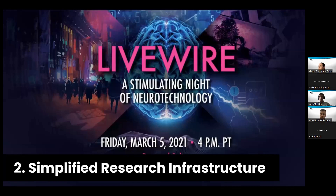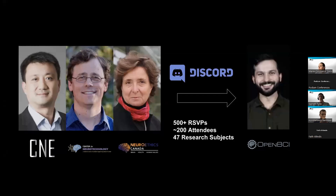The second principle is simplified research infrastructure — developing technologies without complicated interdependencies. We addressed this with an event called Livewire, simulating neuro technology, funded by the USC Arts and Humanities Initiative. It engaged people from around the world with ethical implications of brain technologies, featuring four talks — including speakers from the Center for Neural Engineering at USC, the Center for Neural Technology at the University of Washington, and Neuroethics Canada. We had 500 RSVPs, 200 attendees, and 47 people who signed up as research subjects for follow-up qualitative research.